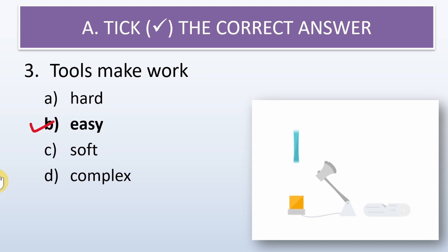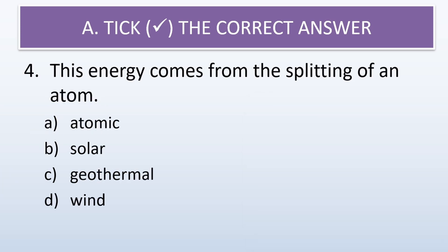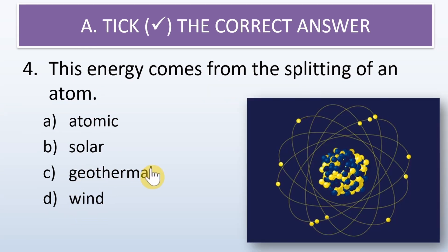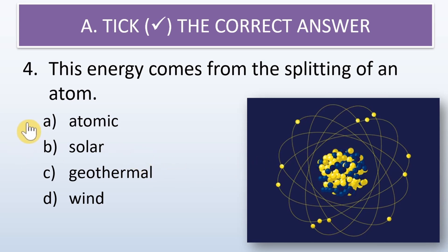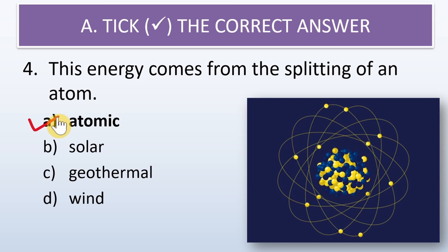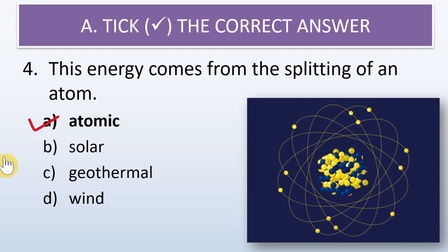Next question: this energy comes from the splitting of an atom — atomic, solar, geothermal, or wind? Which energy comes from the splitting of an atom? As you can see from the diagram, it is atomic energy. So we tick mark atomic. It is atomic energy that comes from the splitting of the atom.